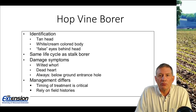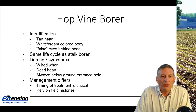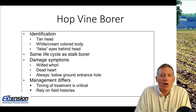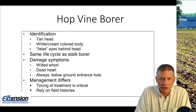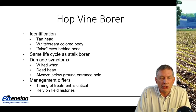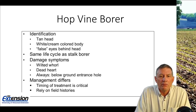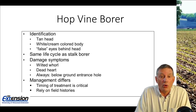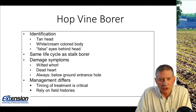A very close relative of the common stalk borer is the hop vine borer. To identify them, they have a tan colored head, much like the stalk borer, but their body is kind of a whitish or cream color. They do have a set of false eyes right behind the head. Their life cycle is very similar to that of the stalk borer — fall-laid eggs on perennial grasses. The above-ground damage symptoms are somewhat similar to stalk borer, but you will not see scarring on the leaves or holes in the leaves. Instead, you will see either the wilted whorl or dead heart symptoms. But the entrance hole for hop vine borer will always be below ground level — they enter that corn plant below the surface of the soil.